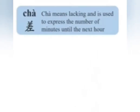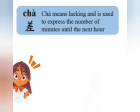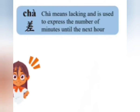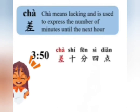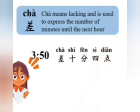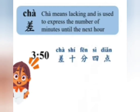Our last special case is 差, which means 'lacking,' and is used to express the number of minutes until the next hour. Please repeat after me: 差, 差, 差. This is used when it's getting close to the next hour. For example, 3:50 is 10 minutes to 4, so you can say 差十分四点. 差 means lacking, 十分 means 10 minutes, and 四点 means 4 o'clock. So literally it means 'lacking 10 minutes to 4 o'clock' — in other words, 10 minutes to 4. Please repeat: 差十分四点.